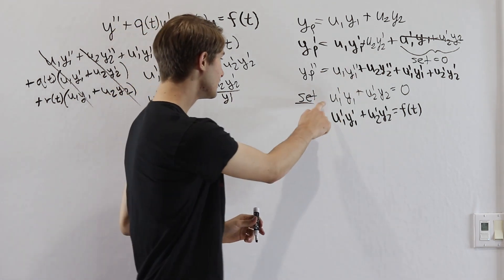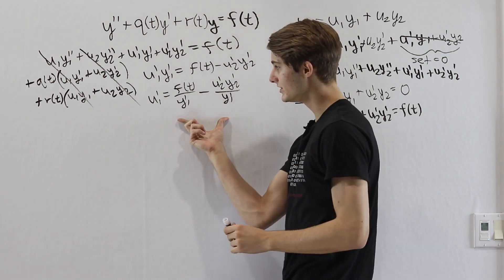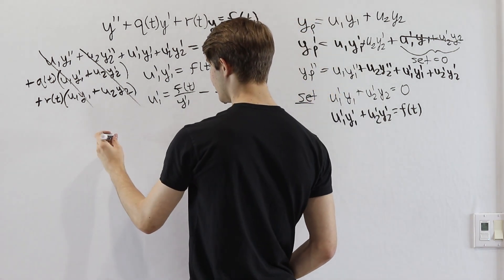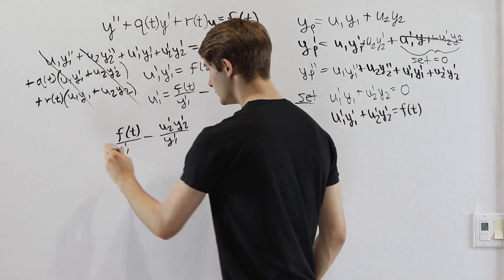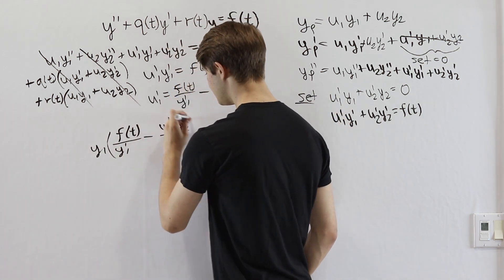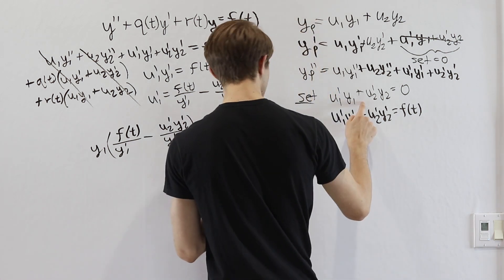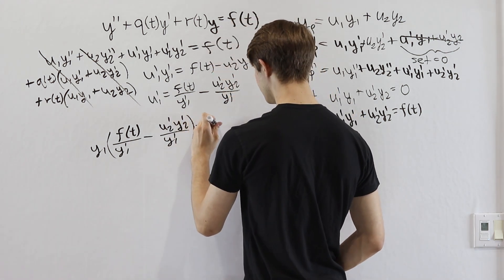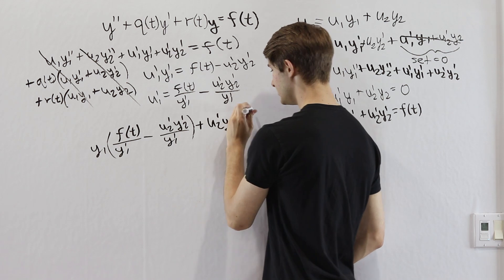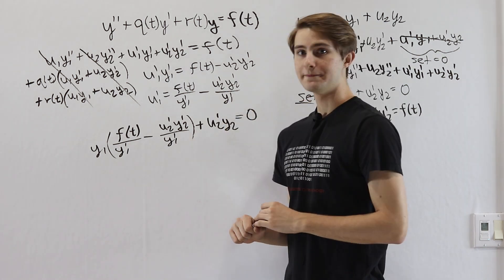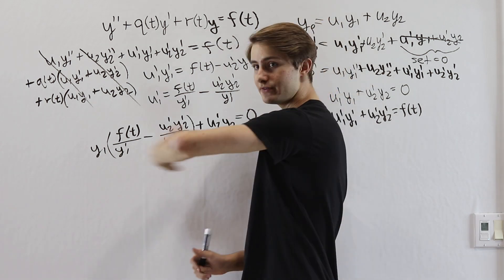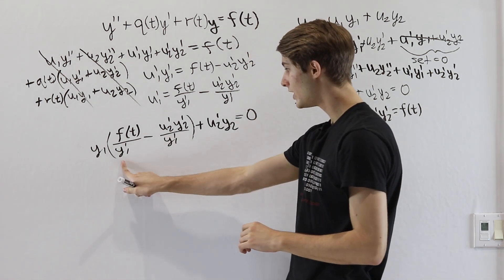Our equation here, our u1 prime is going to turn into this. So let's write this all out. And that whole thing is multiplied by y1 prime. So let's put that out here. And then we're going to add u2 prime y2 and this is equal to 0. So our goal is to isolate u2 prime.